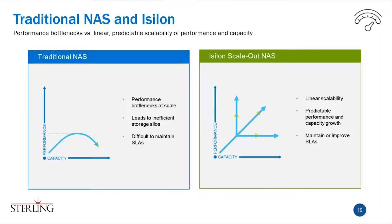Traditional NAS doesn't scale performance when you scale size. You can increase NAS by adding disk shelves until you top out your storage controllers, but when you fill them up and the storage heads reach their limitations, performance falls off. Essentially you've got one pipe in or out — it's a limited size, and even though it's huge you can only get data in and out as fast as that one pipe. Traditional storage also leads to over-provisioning — RAID overhead, hot spare overhead — you end up buying a lot more disk than you actually need.